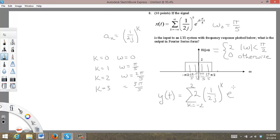e to the j k pi over 5t. So the 2 and the 1 over 2j to the k is our b sub k. And there's only 5 of them.